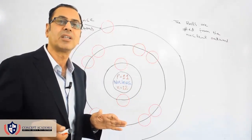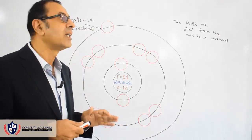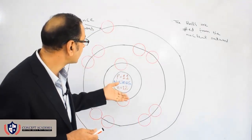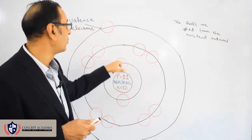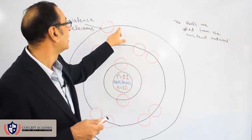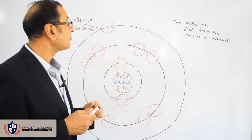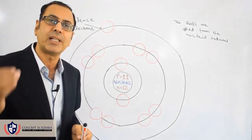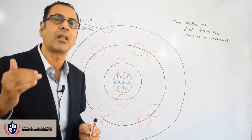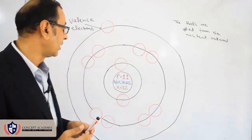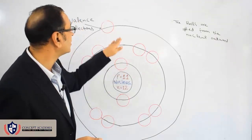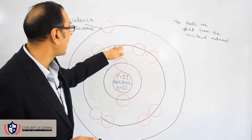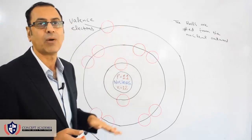Electrons revolve around the nucleus in various shells. These shells are numbered from the nucleus outward: shell number 1, shell number 2, and shell number 3. These are also called energy levels, so you may call it a shell or an energy level — energy level 1, energy level 2, or energy level 3.